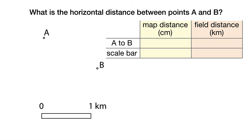To visualize how these data are related to each other, I've made a table that has separate vertical columns for map distances expressed in centimeters and field distances measured horizontally across the landscape and expressed in kilometers.